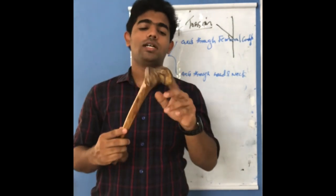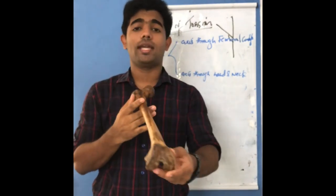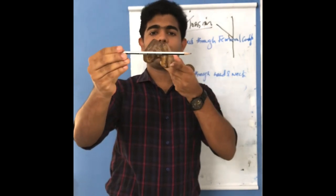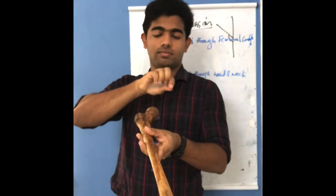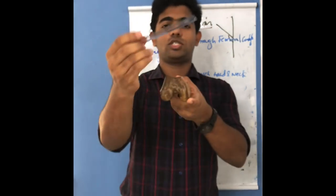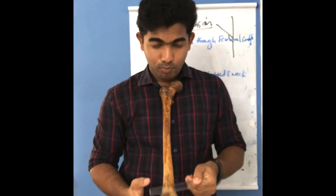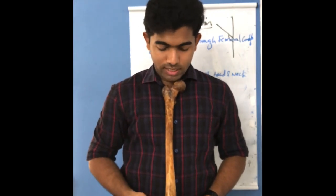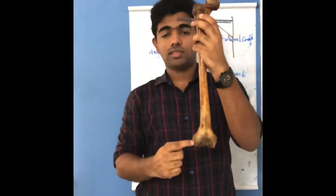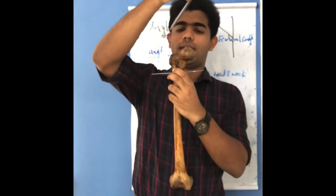The confusion is this: you have the condyles in the lower part of the femur whereas the head is in the upper part. How is it going to make an angle? The axis passing through the femoral condyle is here, and the axis through the head is here. To relate both, we take this axis passing through the femoral condyle and drag it upwards to the top portion.